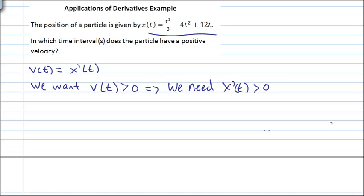So the first step is always take the derivative. So let's do that. x prime of t will be 3t squared over 3 minus 8t plus 12. So this gives us, the 3s will cancel, we get t squared minus 8t plus 12.